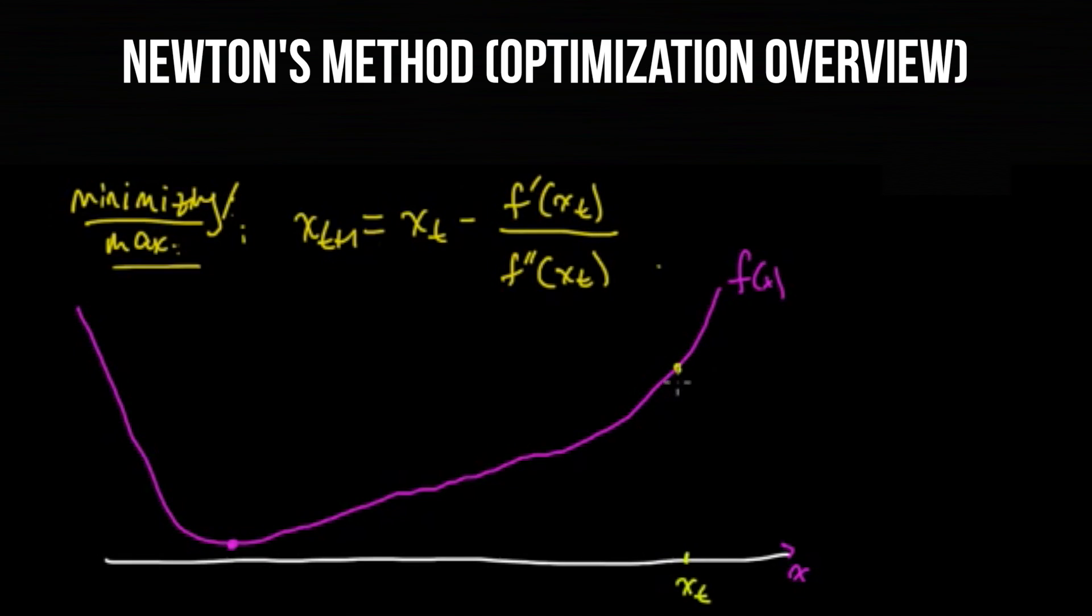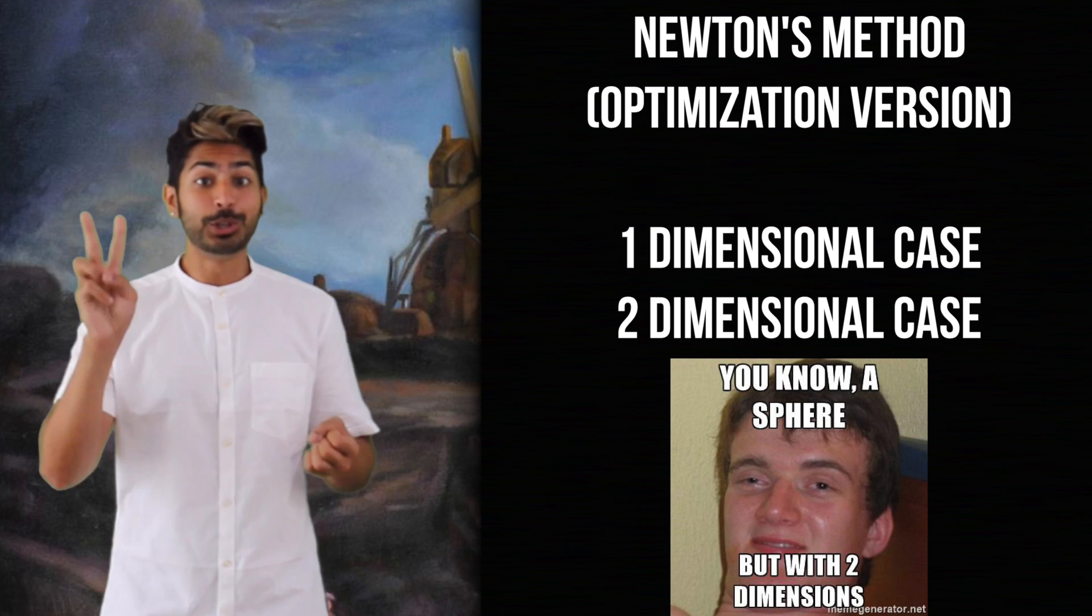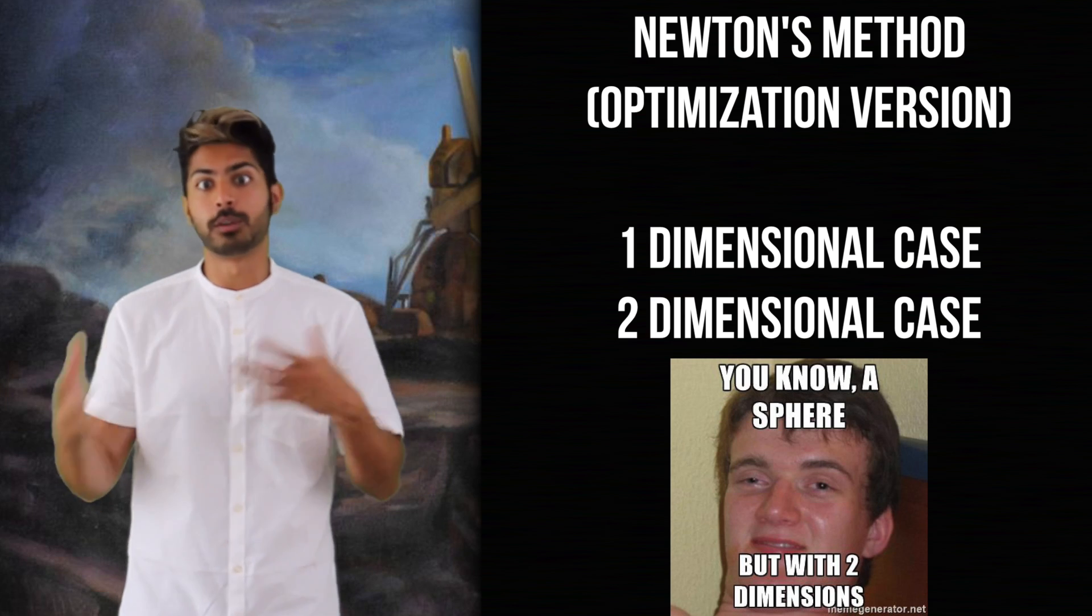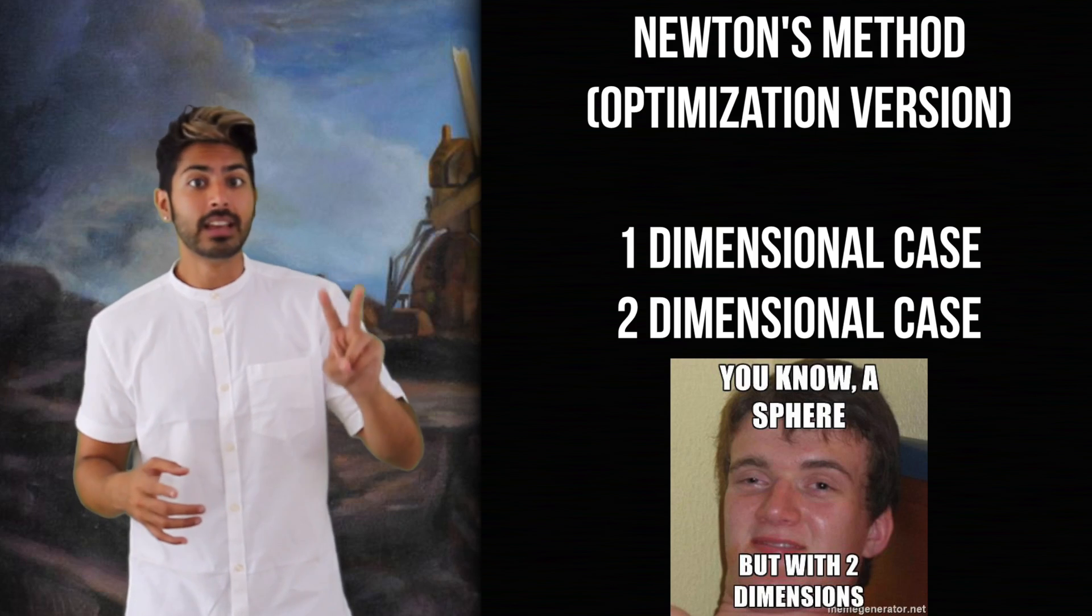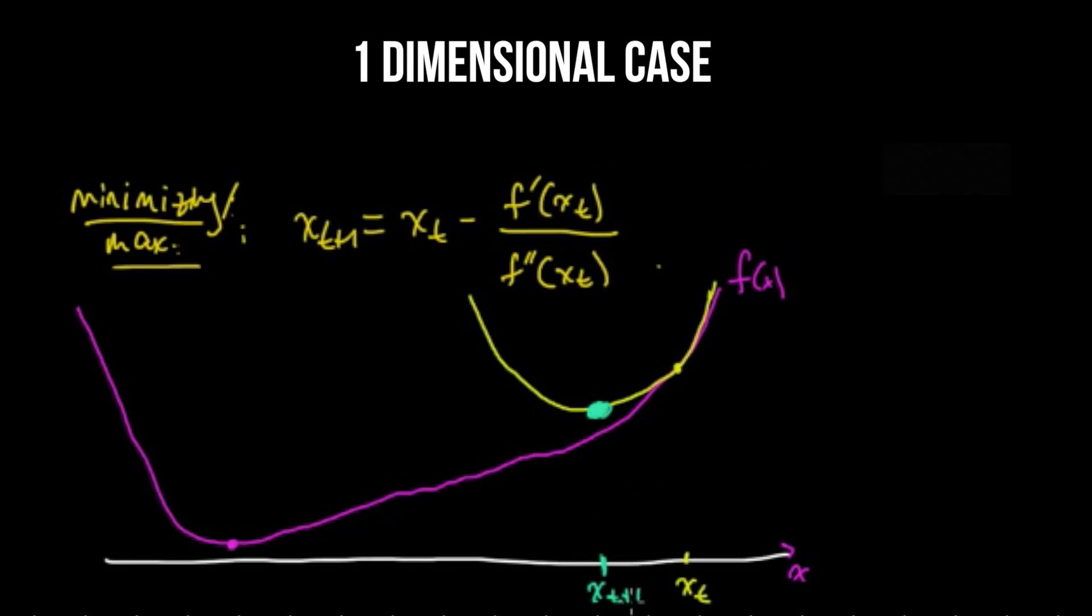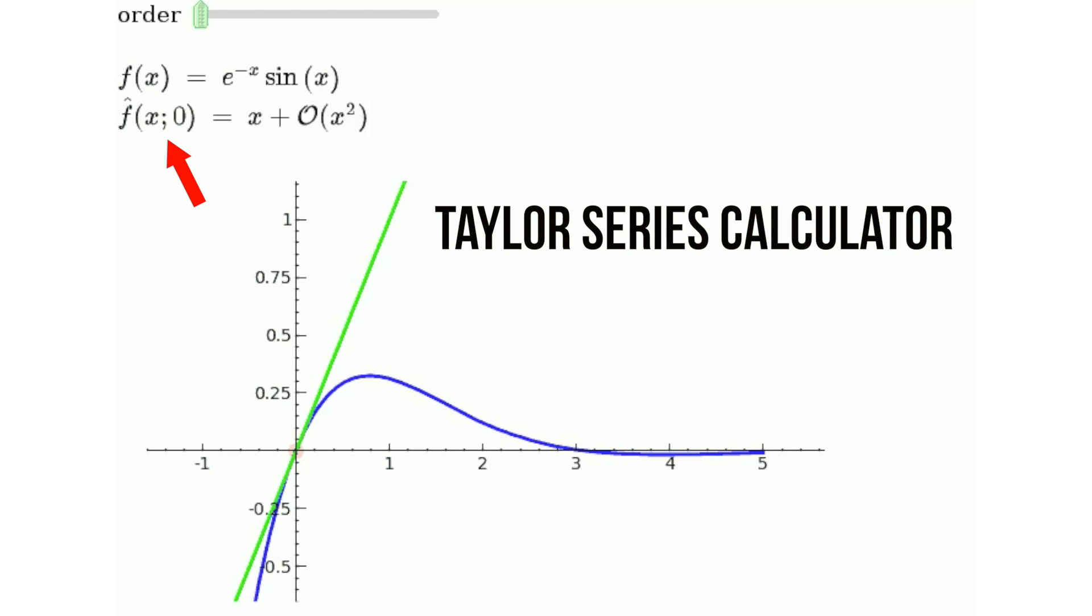At a high level, given a random starting location, we construct a quadratic approximation to the objective function that matches the first and second derivative values at that point. And then we minimize that quadratic function instead of the original function. The minimizer of the quadratic function is used as the starting point in the next step. And we repeat this process iteratively. Okay, so let's go over two cases of Newton's method for optimization to learn more. A 1D case and a 2D case. In the first case, we've got a one-dimensional function. We can obtain a quadratic approximation at a given point of the function using what's called a Taylor series expansion, neglecting terms of order 3 or higher.